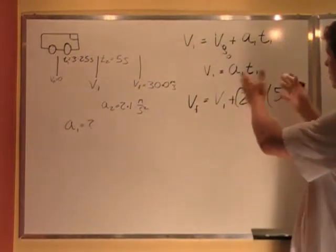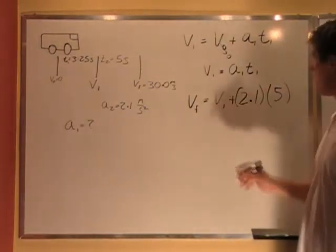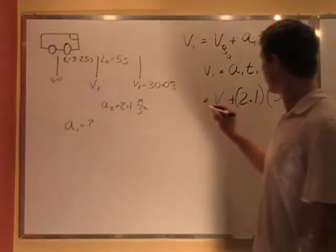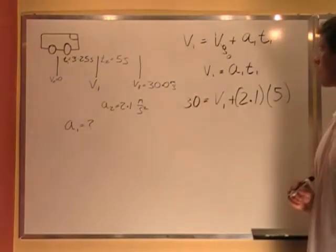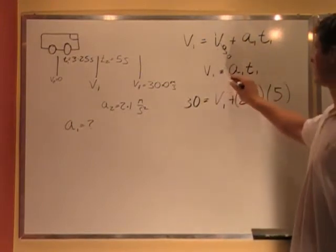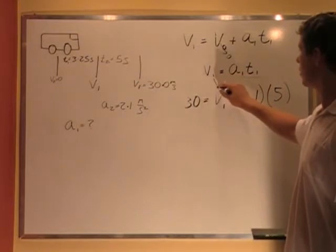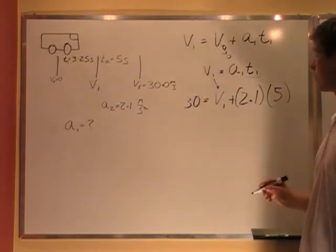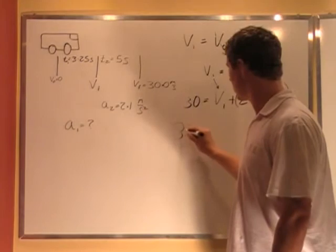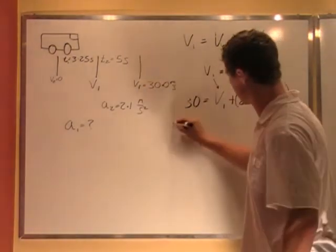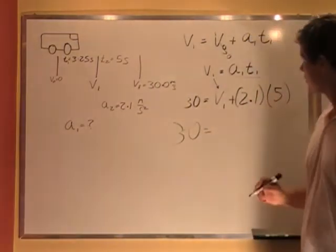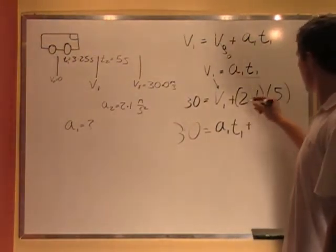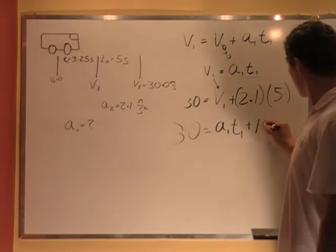So right away, I see that I can do some substitution to figure out what the answer is. I know my final velocity is 30 meters per second. I know V1 is equal to A1 T1. So I'm going to take this and plug it in. This V1 is the same as A1 T1, because I solved that in the first case. So I can say 30 equals A1 T1 instead of V1, plus, and if I multiply this, 5 times 2.1 is 10.5.